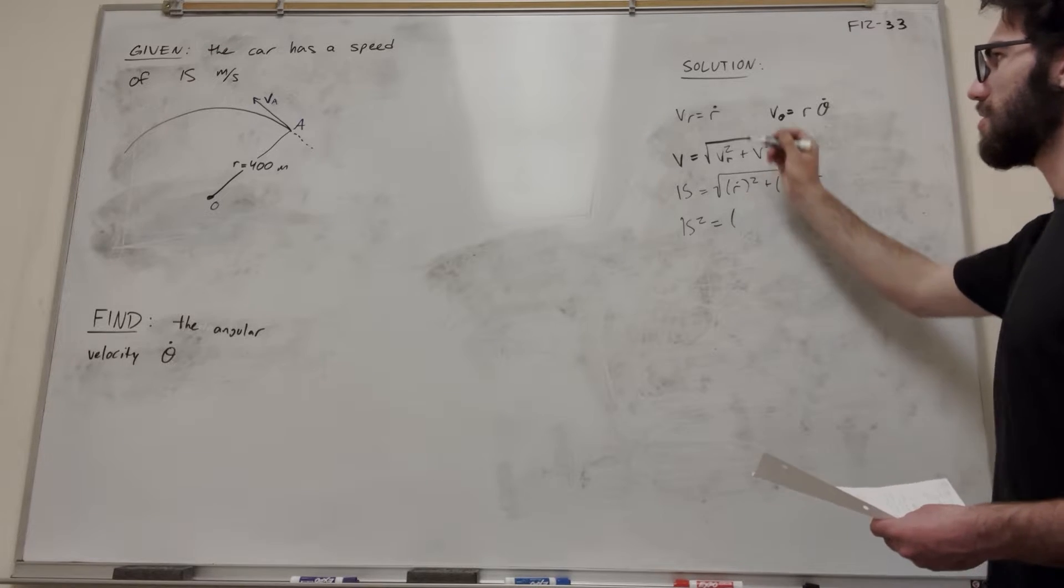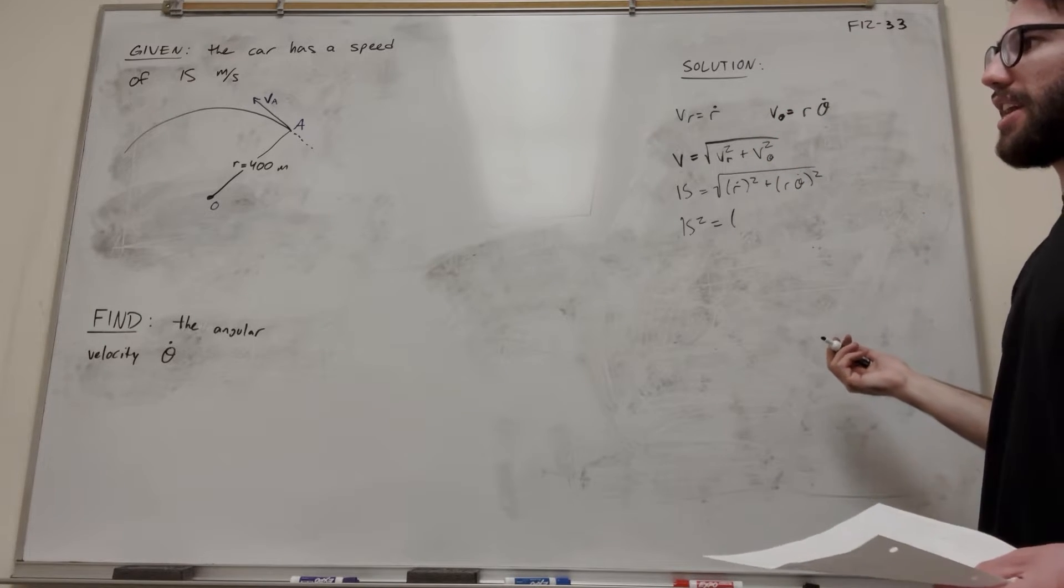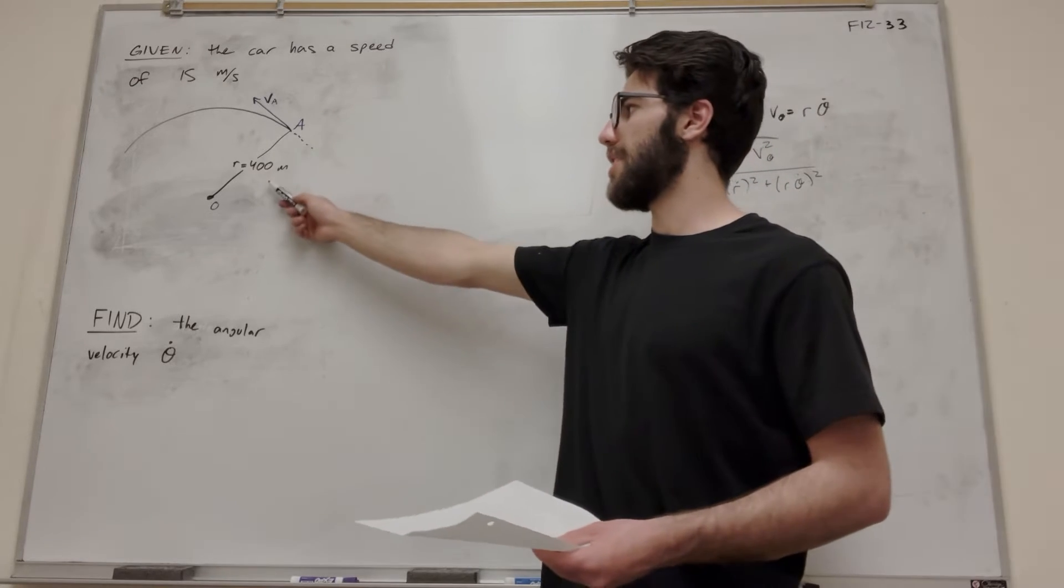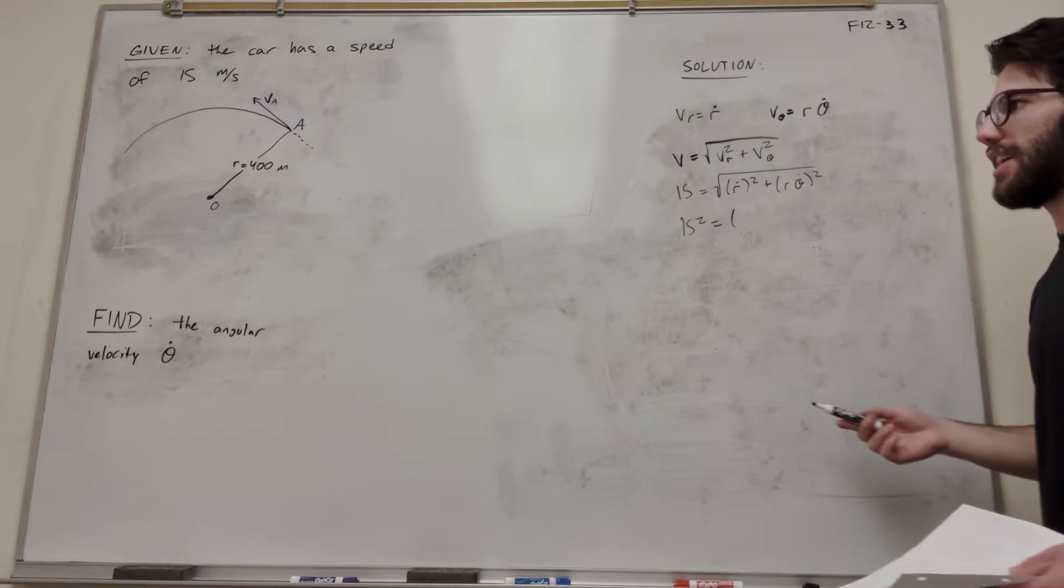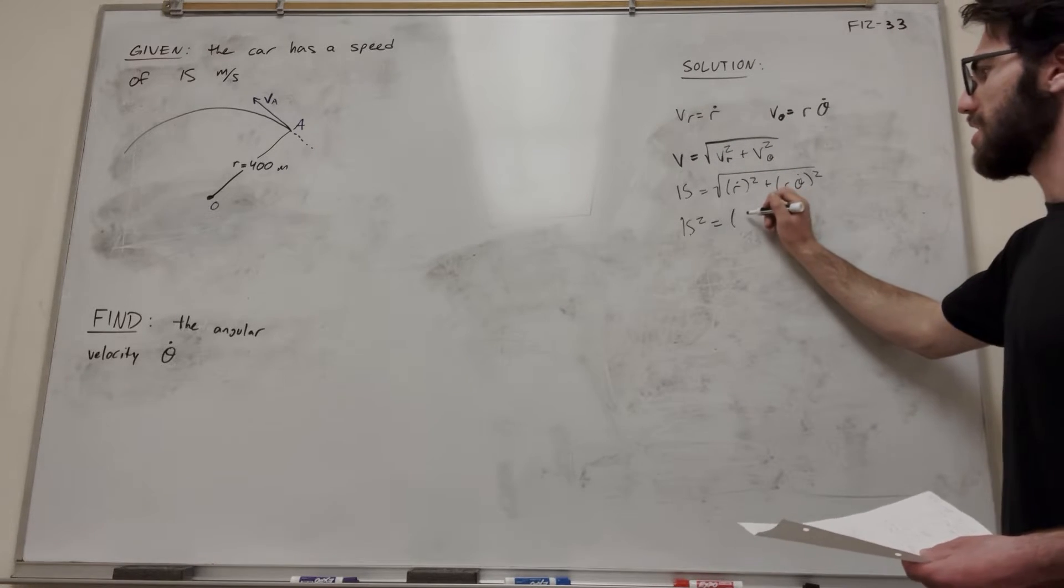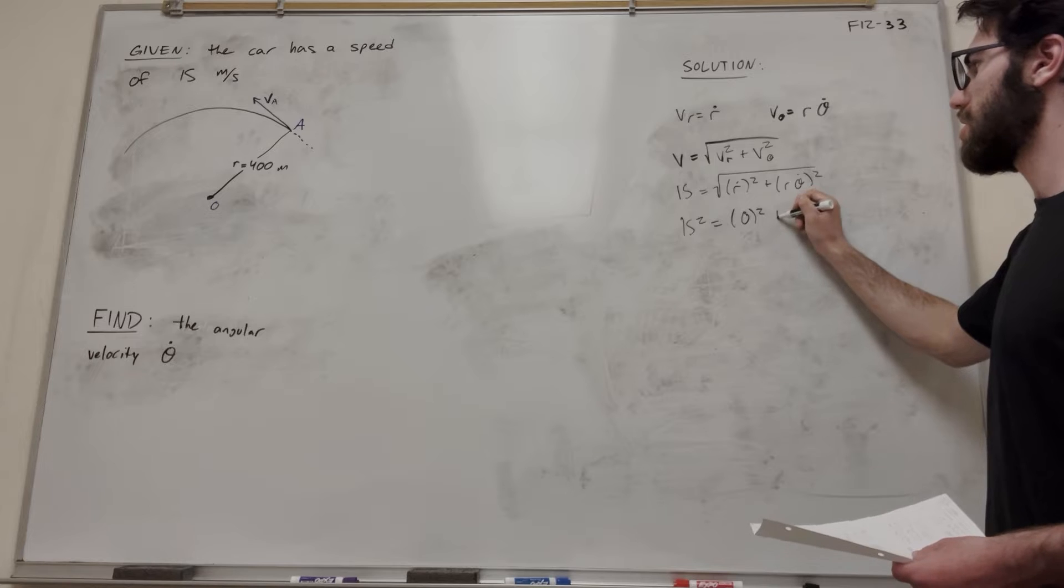So r dot is the time derivative of the radius. That being said, our radius is just equal to 400 meters. We take the derivative of 400, we get zero. That's because the radius isn't changing, so the change of radius is going to be zero. So we can plug in a zero right there.